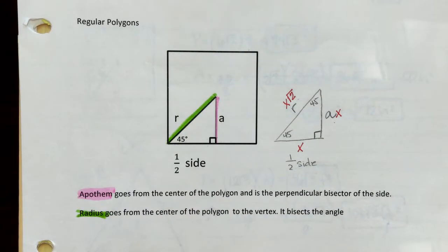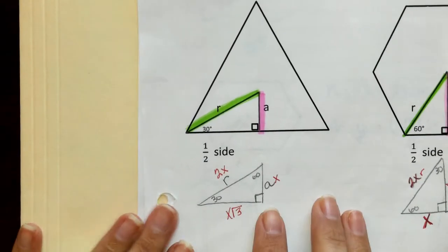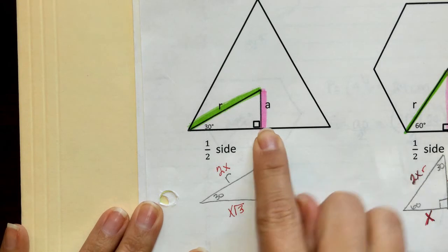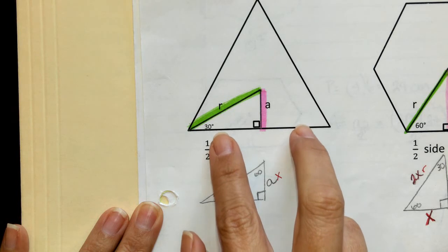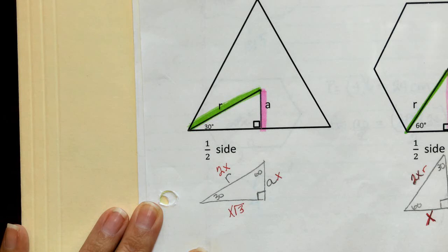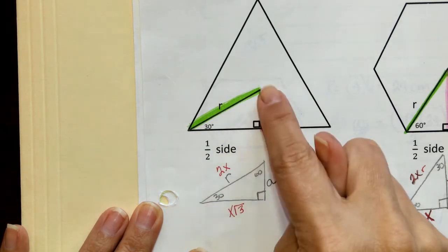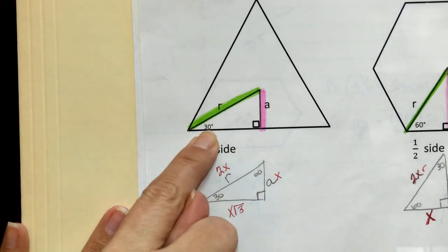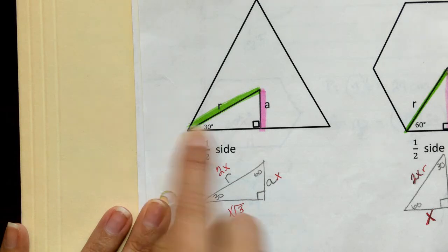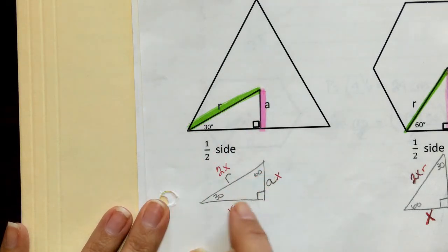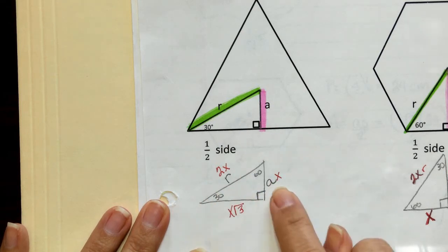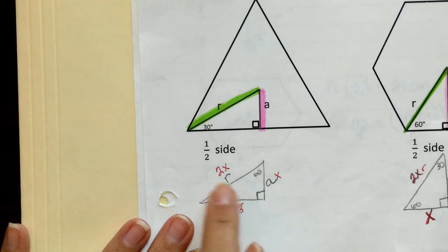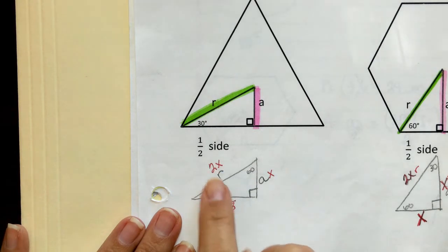What if we took this same apothem and radius and placed them into a triangle? Your apothem goes from the center of the triangle to the side and is the perpendicular bisector of the side, chopping that base into two congruent pieces. This is an equilateral triangle. When we take our radius from the center of the polygon to the vertex, it bisects the angle. With an angle of 60 degrees, the radius creates a 30-degree base angle, forming a 30-60-90 triangle. Across from the 30 is x — which also represents the apothem. Across from the 60 is x√3, and across from the 90 is 2x, which represents our radius.